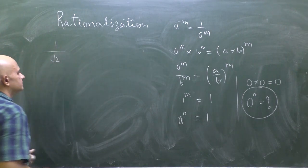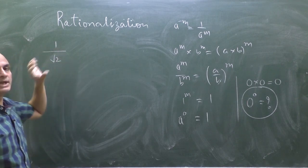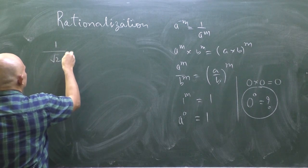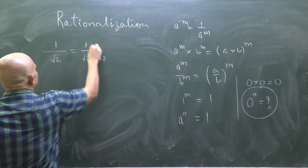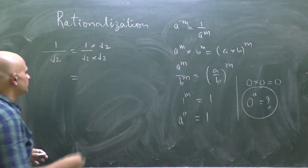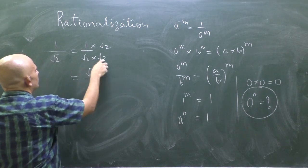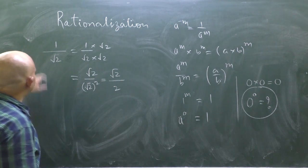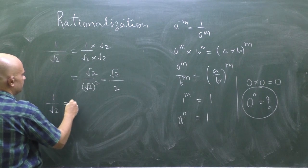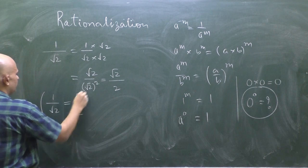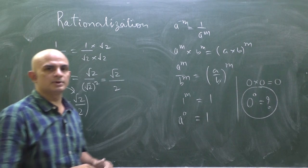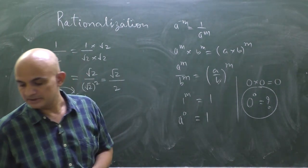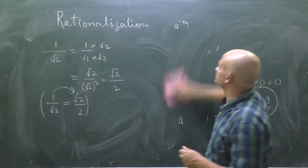To rationalize a denominator, suppose I wish to rationalize 1 over root 2. I will multiply and divide by root 2, so this becomes 1 times root 2 over root 2 times root 2, which is root 2 over root 2 squared, which equals root 2 over 2. This is the equivalent fraction whose denominator is now a rational number.